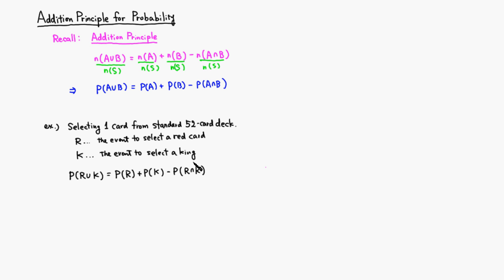The probability of selecting a red card: half the 52 cards are red, so that's 26 out of 52. For a king, there are four kings — one for each suit — so that's 4 out of 52. Then we subtract the probability of a red king: the king of diamonds and the king of hearts, so that's 2 out of 52.